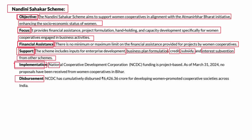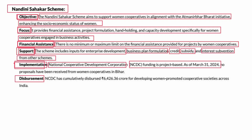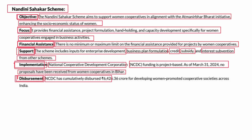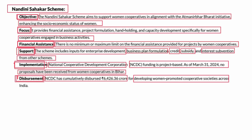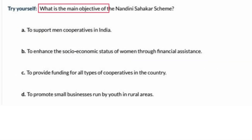The implementing agency is the National Cooperative Development Corporation (NCDC), and funding is project-based. As of March 31st, 2024, no proposals have been received from women cooperatives in Bihar. Cumulatively, NCDC has dispersed 6,426.36 crores for developing women-promoted cooperative societies across India.